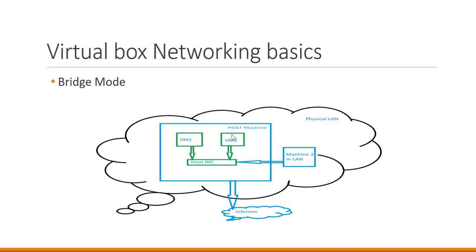In bridge mode, the VMs which are created in VirtualBox will be connected to the host network interface. They will not be directly connected — VirtualBox uses a net filter driver. That driver filters the traffic from the host NIC, and VirtualBox uses that filtered data to create a software interface inside it. These VMs will use that interface, so they appear to be directly connected to the host NIC. The VMs and the host machine will send or receive traffic via this host NIC, and since they are connected to it, they will get IP addresses in the same subnet as the host machine.